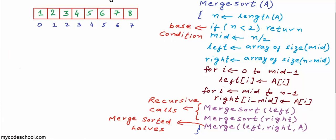So this is merge sort algorithm. At the start of the lesson we said this is O(n log n) in terms of time complexity. In our next lesson we will implement this algorithm, run some real code, and also analyze the time and space complexity of this algorithm. This is it for this lesson. Thanks for watching.